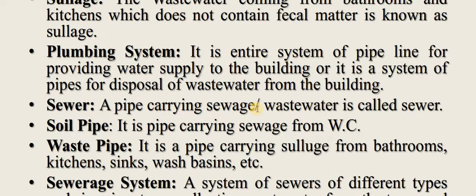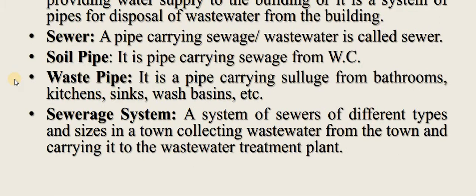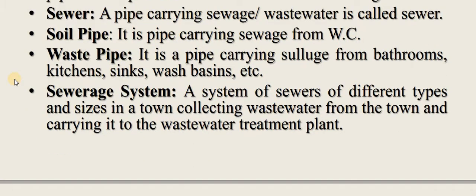Sewer: the pipe carrying wastewater is called a sewer. Soil pipe: a pipe carrying sewage from the WC. Waste pipe: a pipe carrying sullage from bathrooms, kitchens, sinks, washbasins, etc. Sewer system: the system of sewers of different types and sizes in a town collecting wastewater and carrying it to the wastewater treatment plant.